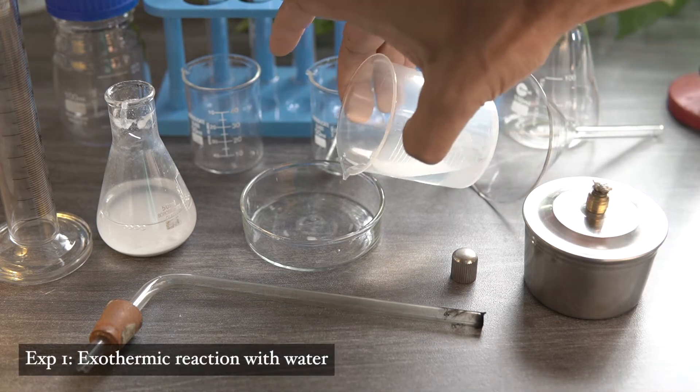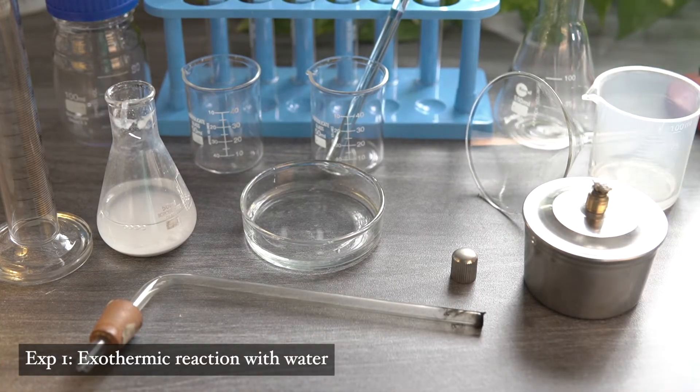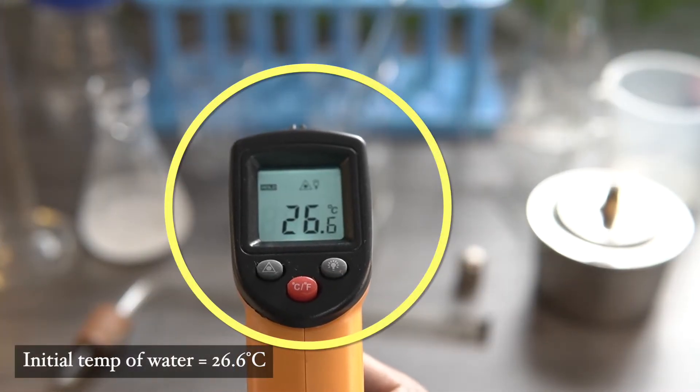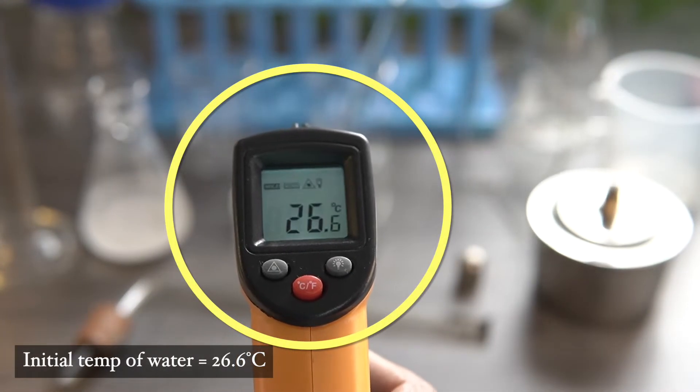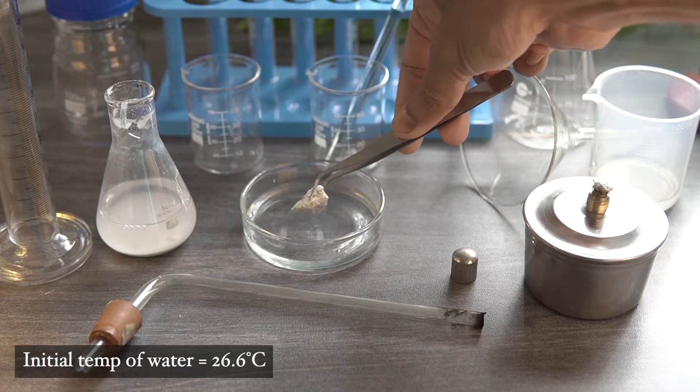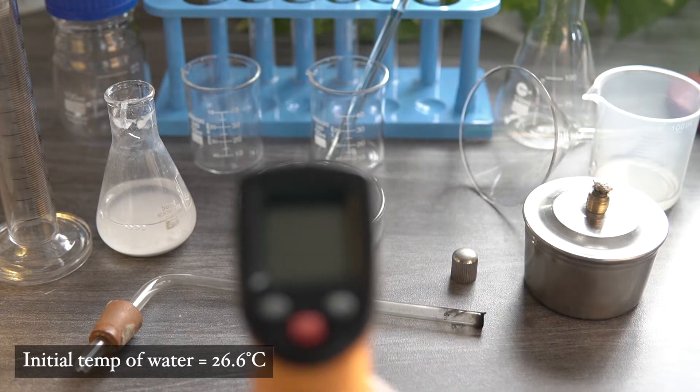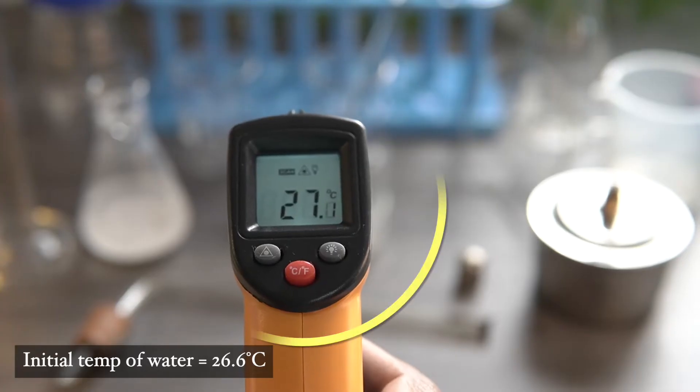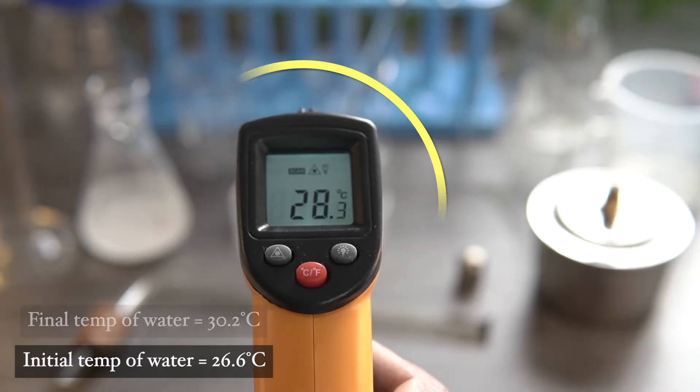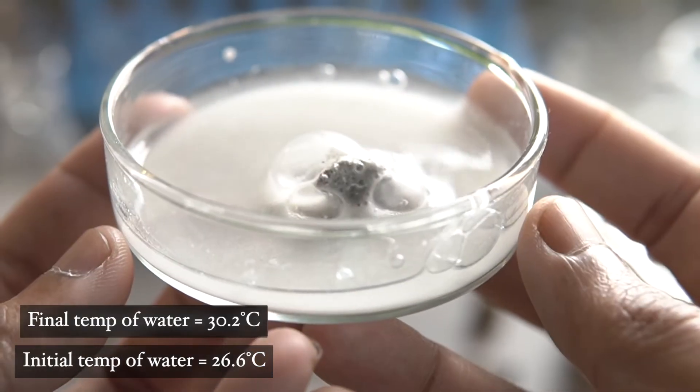We are taking some water in a petri dish and record the initial temperature of water. It's about 26.6 degrees Celsius. Now we will add a small piece of calcium carbide in water and try to record the temperature of the solution. We will see that the temperature is gradually rising, which indicates that the reaction is highly exothermic in nature.